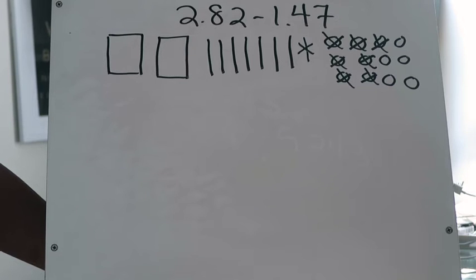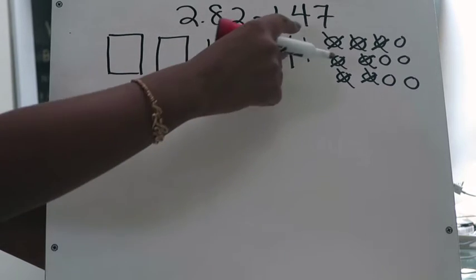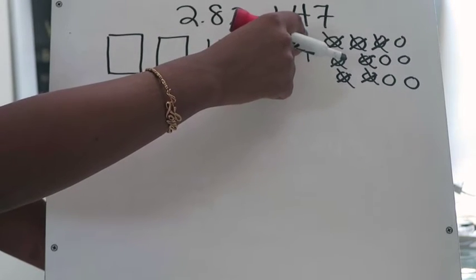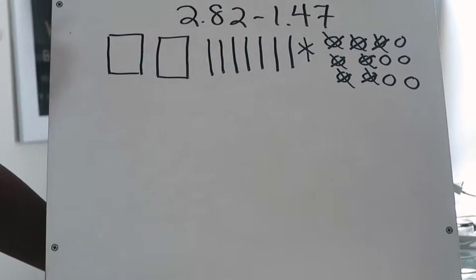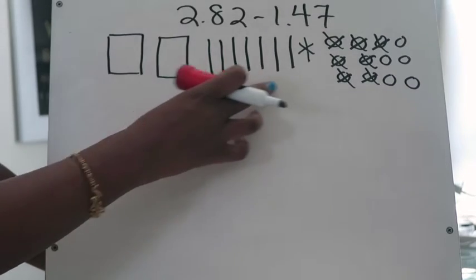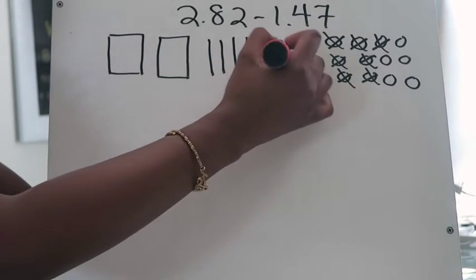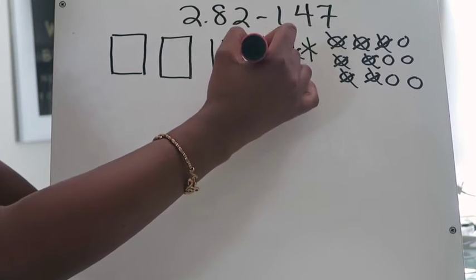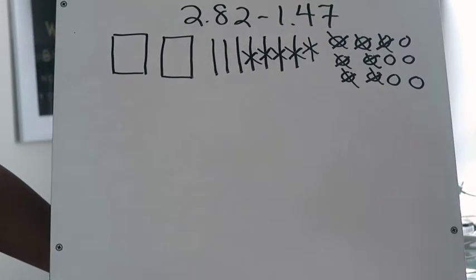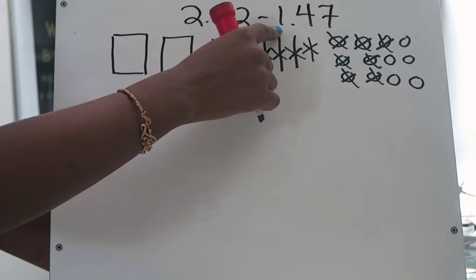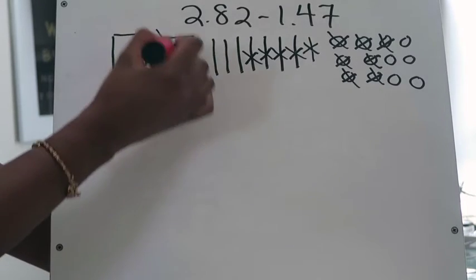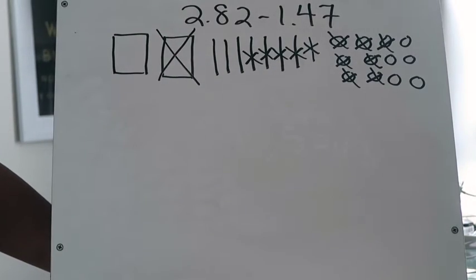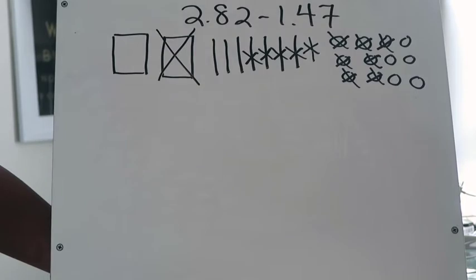The next thing I'm going to do is look at the tenths place. I'm supposed to subtract four tenths from the picture representing two and eighty-two hundredths. Luckily I have enough, so I'm going to cross out one tenth, two tenths, three tenths, and four tenths. Now I'm moving on to the ones place — I'm going to subtract one whole, and again I have enough, so I'll cross out that one whole.